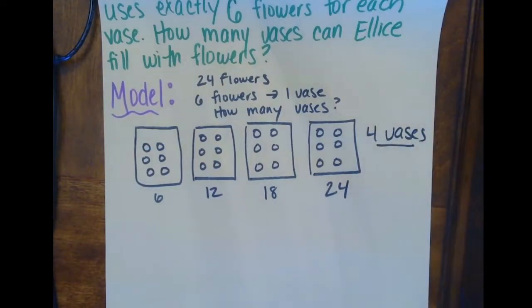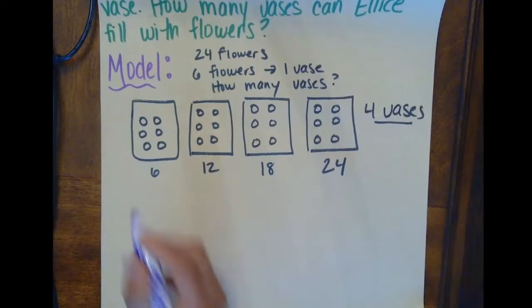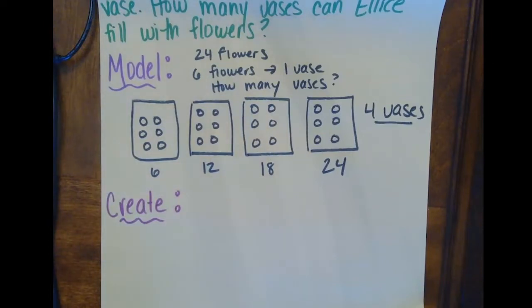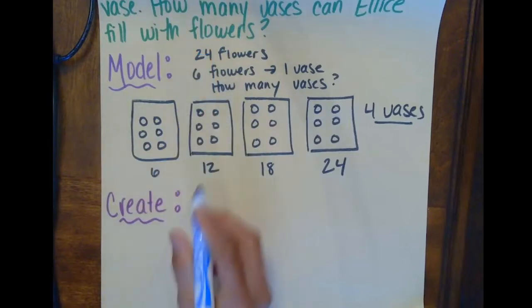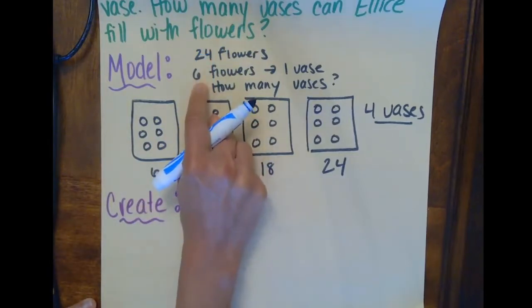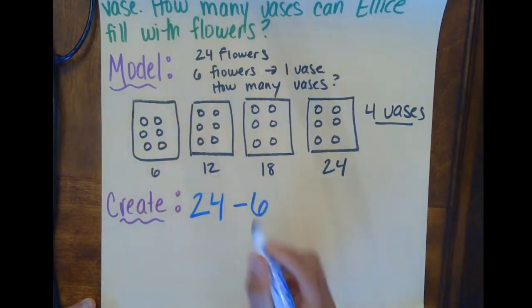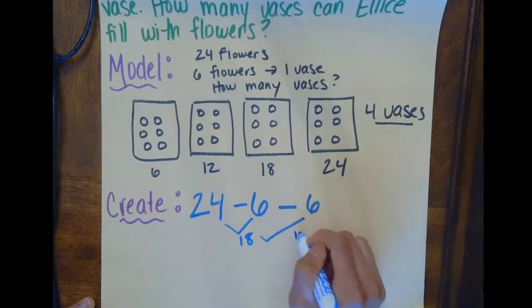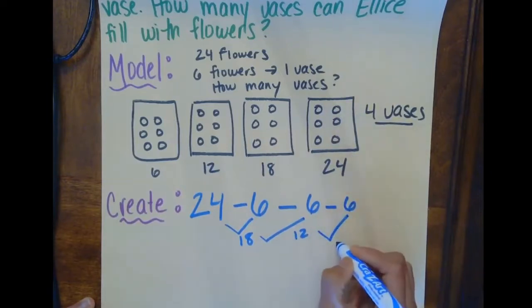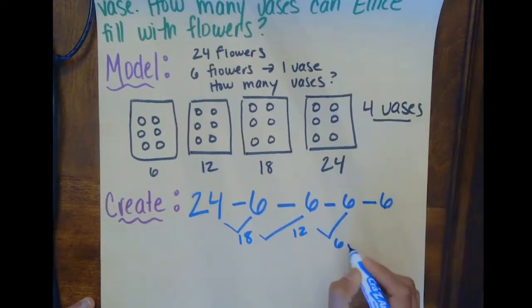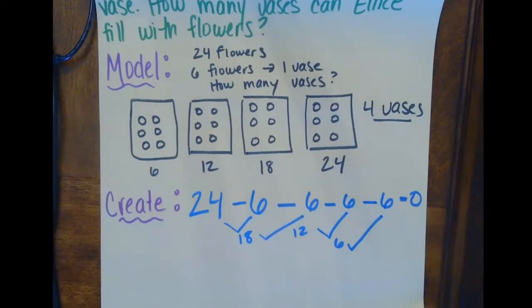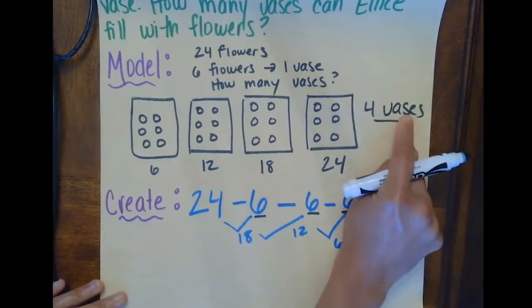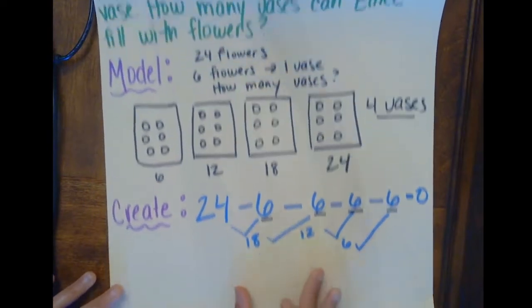Now let's go to the create step, where we write our repeated subtraction equation. I know my total is 24, so 24 is my first number. I keep subtracting 6 until I get to 0: 24 minus 6 is 18, 18 minus 6 is 12, 12 minus 6 is 6, and 6 minus 6 is 0. How many times did I subtract 6 to get to 0? 1, 2, 3, 4 times — and 4 vases was my answer.